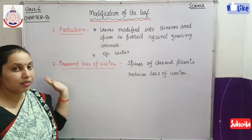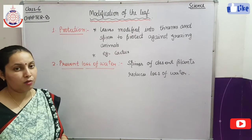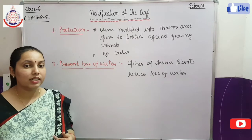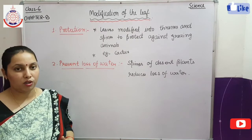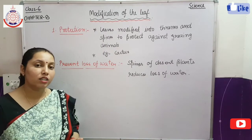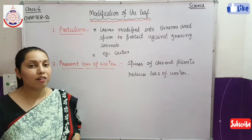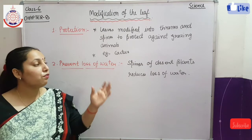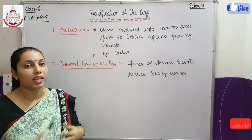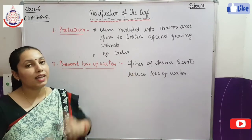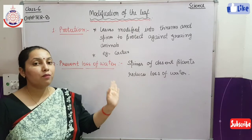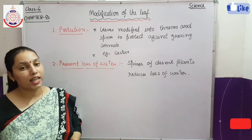The second modification is related to the first. Whenever there are spines, some desert plants are there. In deserts there is a very small amount of water. If transpiration happens continuously, the plant will die after some time. For the reduction of — or prevention of — loss of water, so that less water is lost by the plant, these spines help. The spines of the desert plant reduce the loss of water in that plant.